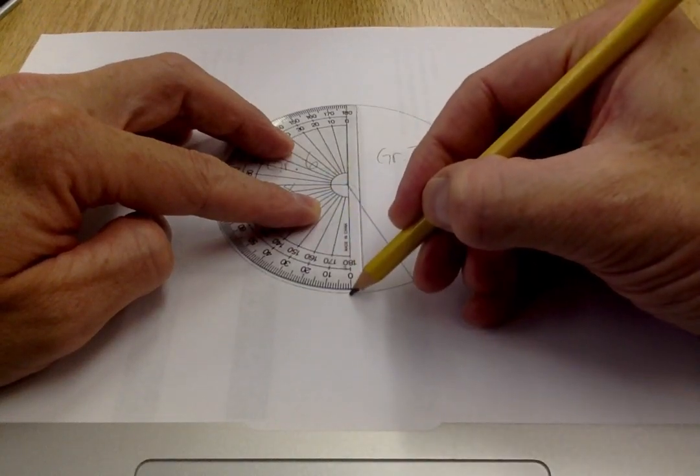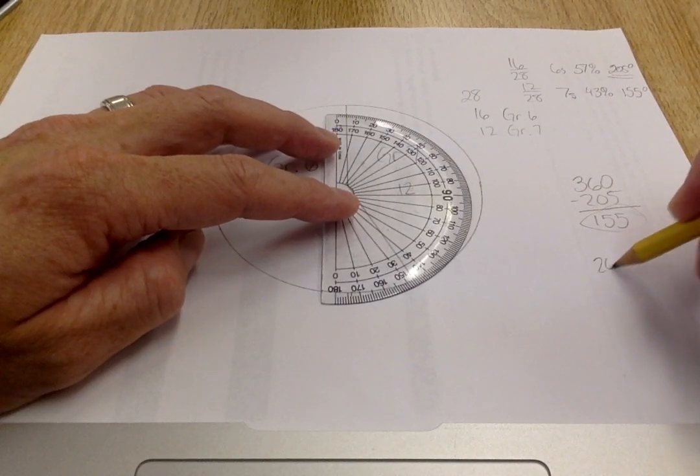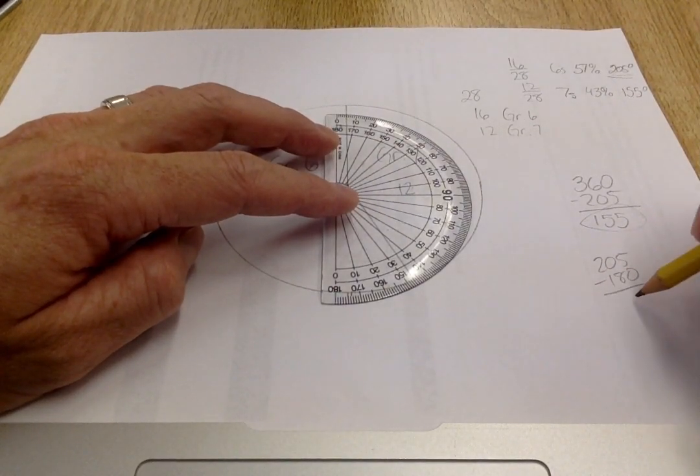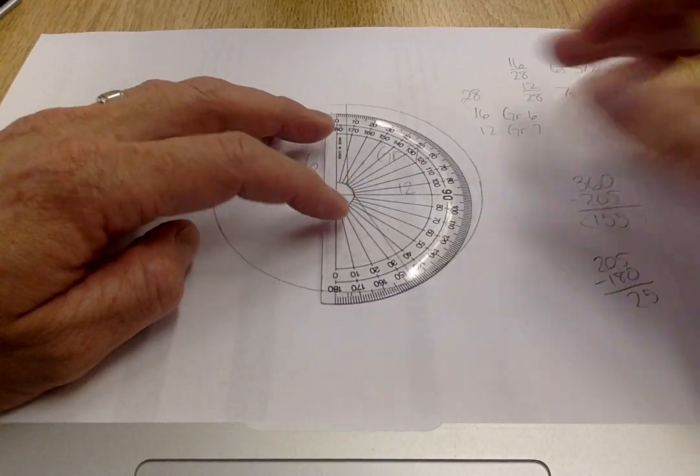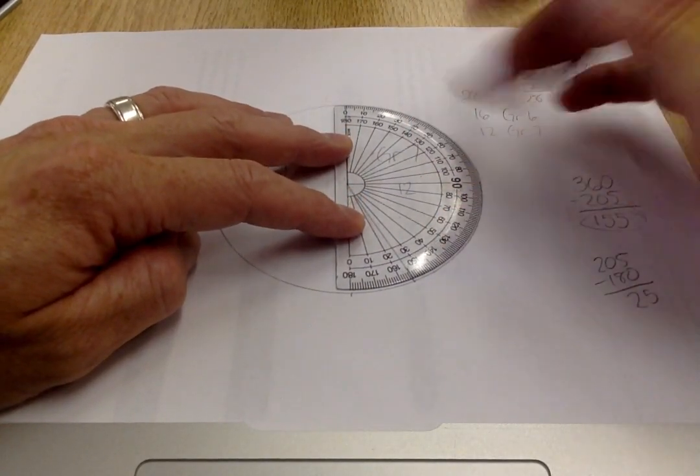Because 205 minus 180 is 25, so I need to add another 25 degrees to this. So I'm going to start over here.